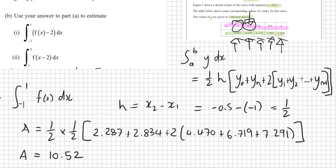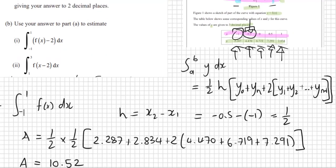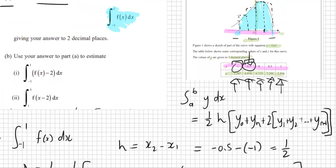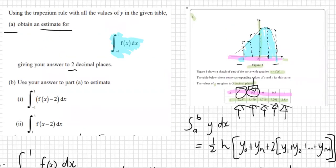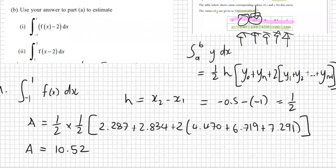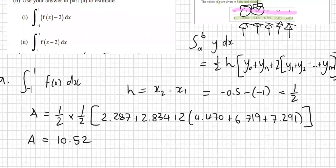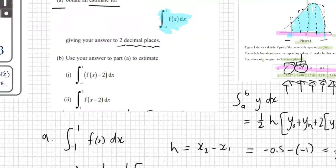And we find that the area is equal to 10.52. Just check your question, it usually says how many decimal places. If it doesn't say how many decimal places, there we go, two decimal places. So that's the answer for number A.